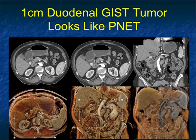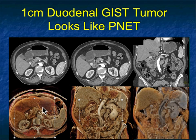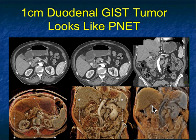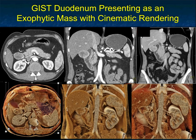Let's look at some examples. On this case, on the axial images there's an enhancing lesion in the duodenum, one centimeter — there it is on the coronal, very nicely shown in the duodenum on the cinematic rendering. You can see how I've changed the rendering parameters to really accentuate the visualization. Just a very nice example of a GIST tumor. You could have thought of carcinoid as well — that would have been a good differential diagnosis.